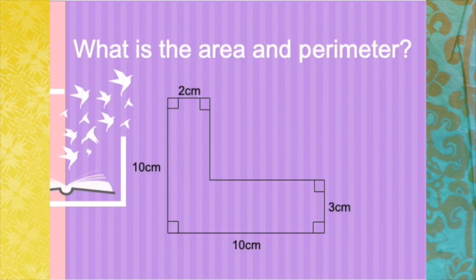The additive method is simply to cut the rectilinear shape into two shapes and add the areas — area 1 and area 2. However, in this video, I will show you how to do the subtractive method.